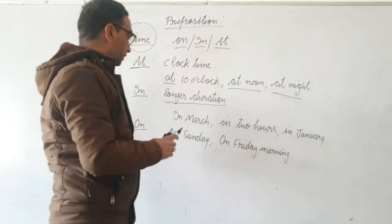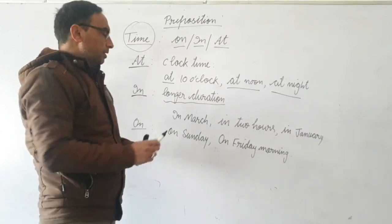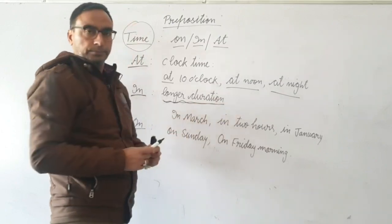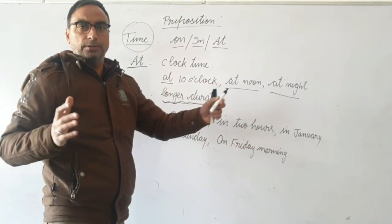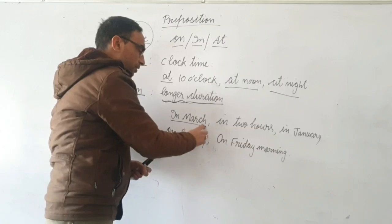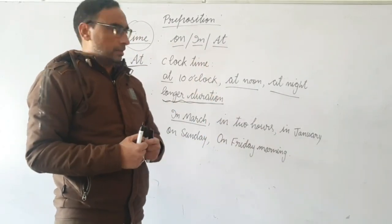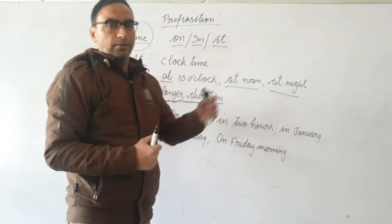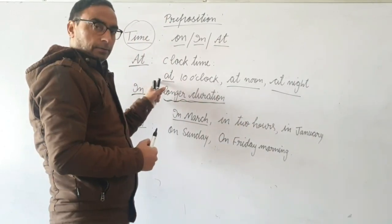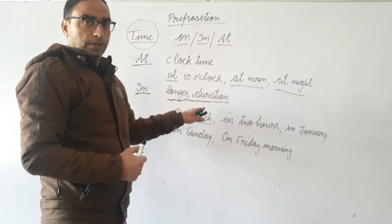Then comes 'in'. 'In' is used for longer duration — such as in March, in January, in two hours. So 'at' is for clock time and 'in' is for longer duration.